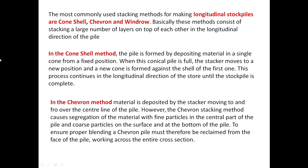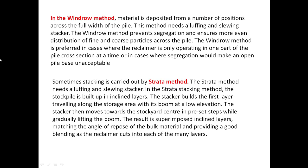In the chevron method, material is deposited by a stacker moving to and fro over the center line of the pile. However, the chevron stacking method causes segregation of the material — fine particles accumulate in the central part of the pile and coarse particles appear on the surface and at the bottom. To ensure proper blending, a chevron pile must be reclaimed from the face of the pile working across the entire cross section.